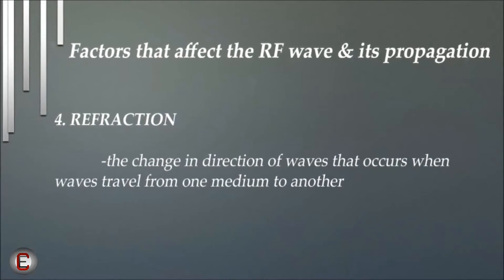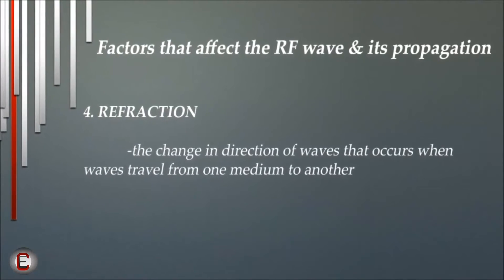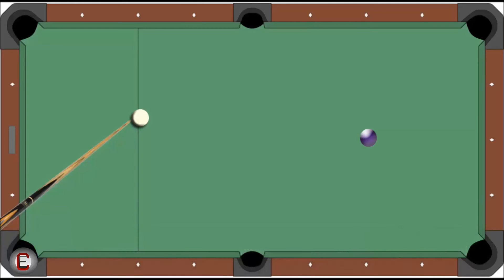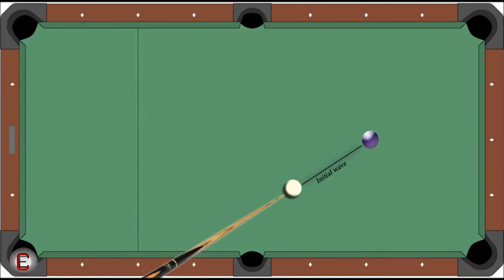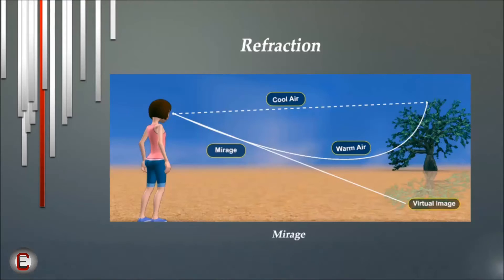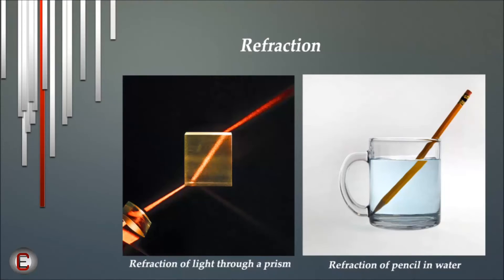Refraction is the change in direction of waves that occurs when waves travel from one medium to another. Refraction is always accompanied by a wavelength and speed change. Imagine a snooker table with one white ball and one colored ball. The white ball is the initial wave. When the ball hits the edge of the other ball, the motion of the colored ball is now the refracted wave. Note that the speed change of waves cannot be shown in this analogy, but there is a speed change in refraction. Some examples of refraction in outdoor environments are air temperature and air pressure changes. In indoor environments, certain types of glass can cause refraction.